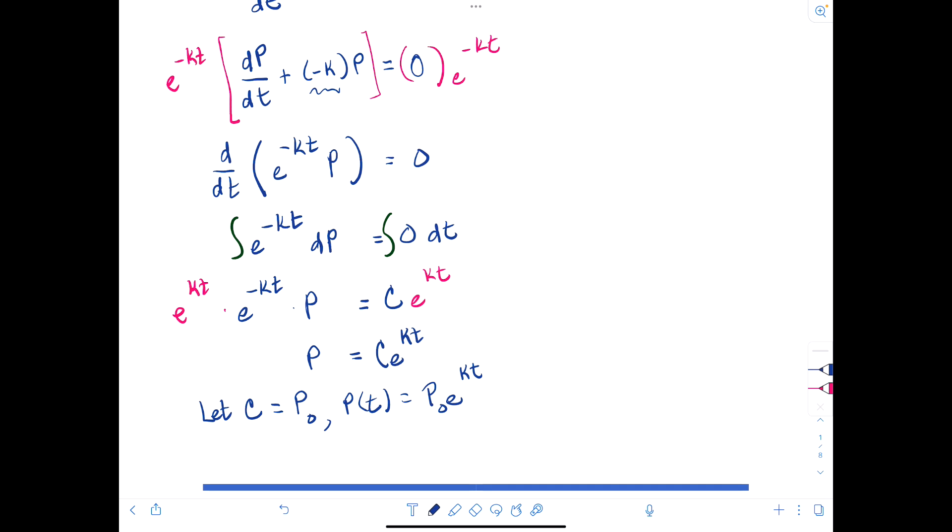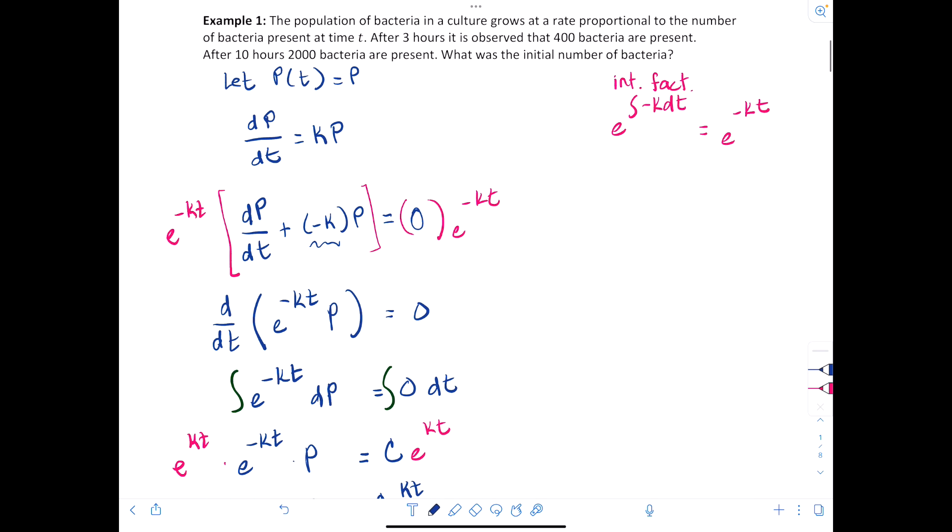That's the first part of what we needed to do. Now what we also need to do here is we need to find our k. So we've been given some ordered pairs here. If we take a look, we have the ordered pair (3, 400).